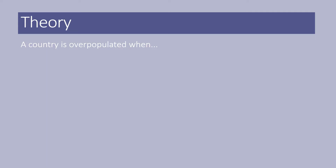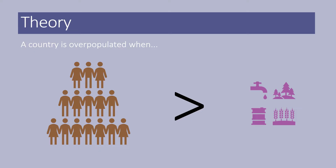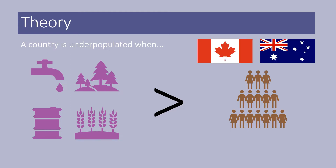Let's go through the theory about what we mean by an overpopulated and underpopulated country. An overpopulated country is when the population is greater than the amount of resources available to support that country's population. Really famous examples are Bangladesh and Nigeria. An underpopulated country is when there are huge amounts of resources but very few people to use them, with famous examples being Canada or Australia.